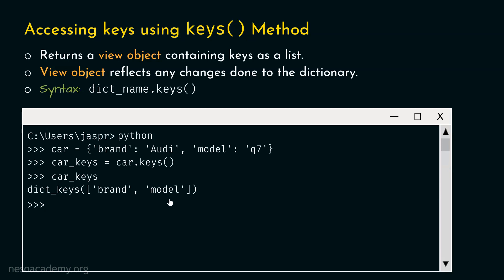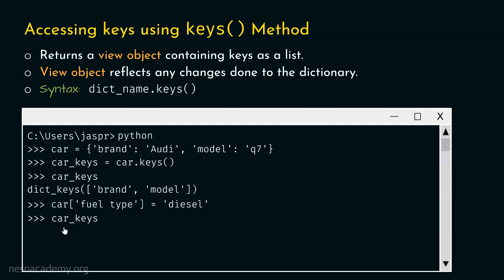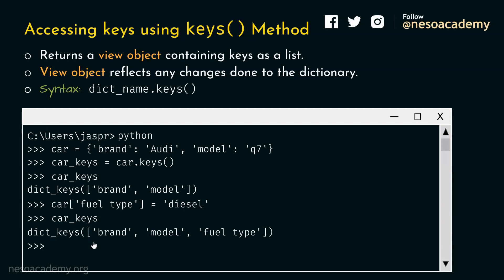Let's say we decided to add a new key called fuel type. We type car fuel_type equal to diesel. Let's hit enter and now check whether car_keys is updated. We type car_keys and hit enter again. We can observe that the view object is updated and now has three keys: brand, model, and fuel_type. This confirms that the view object reflects any changes done to the dictionary.